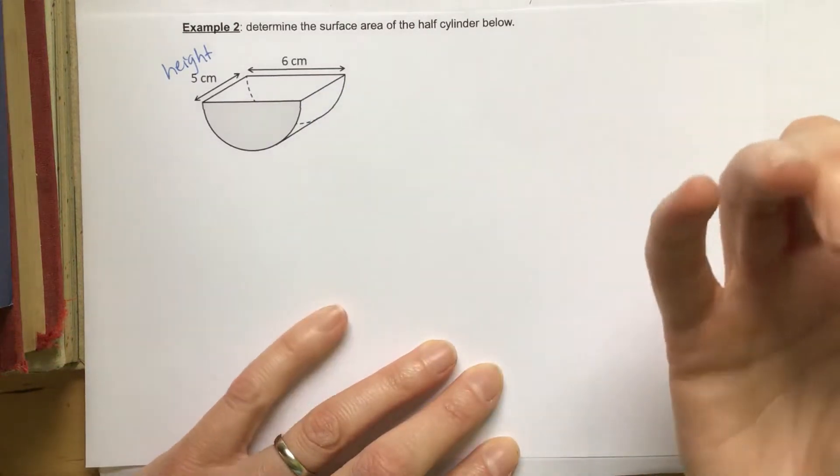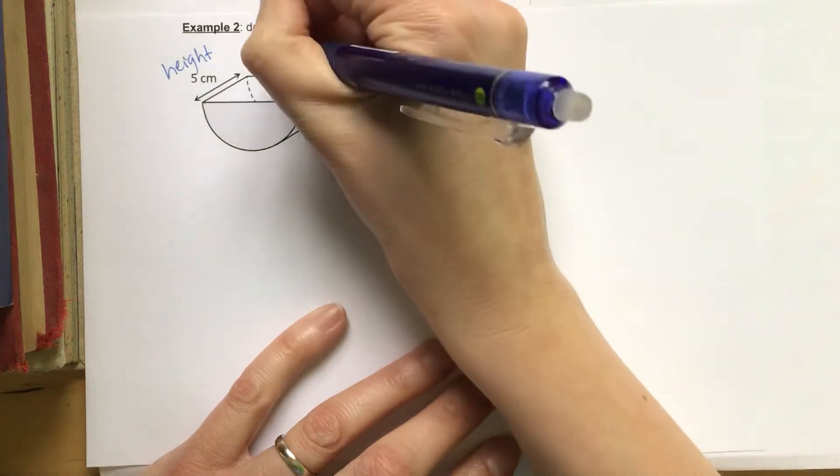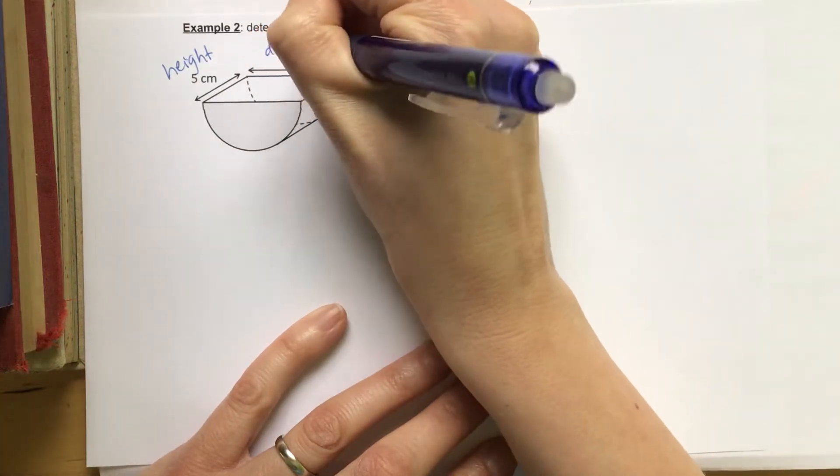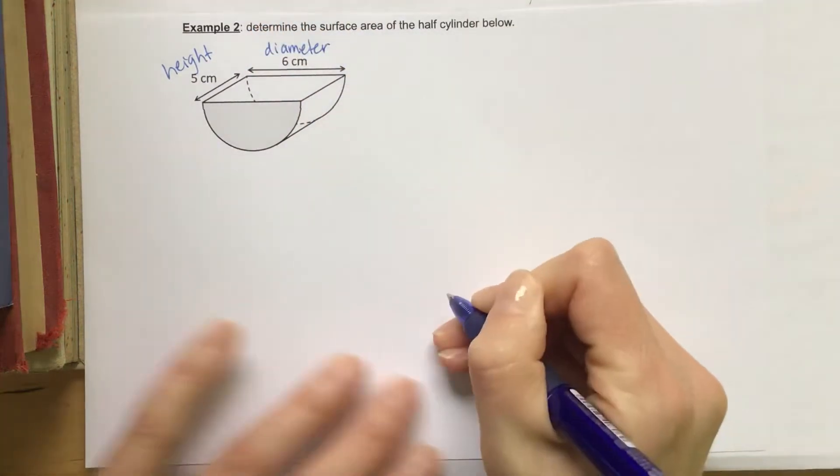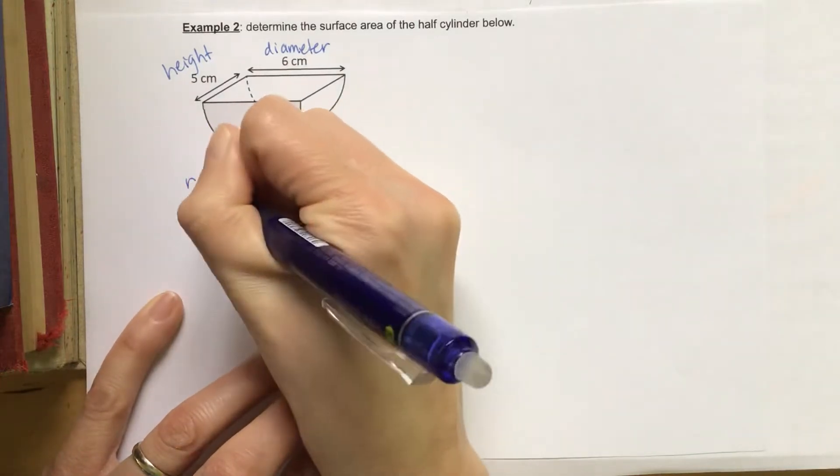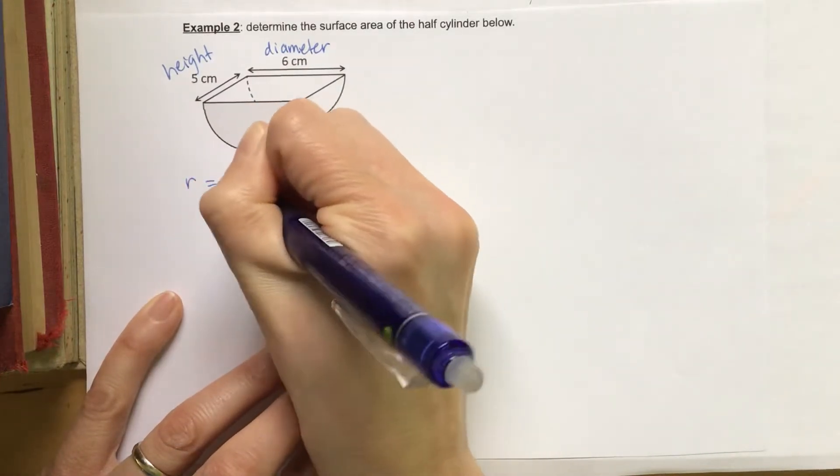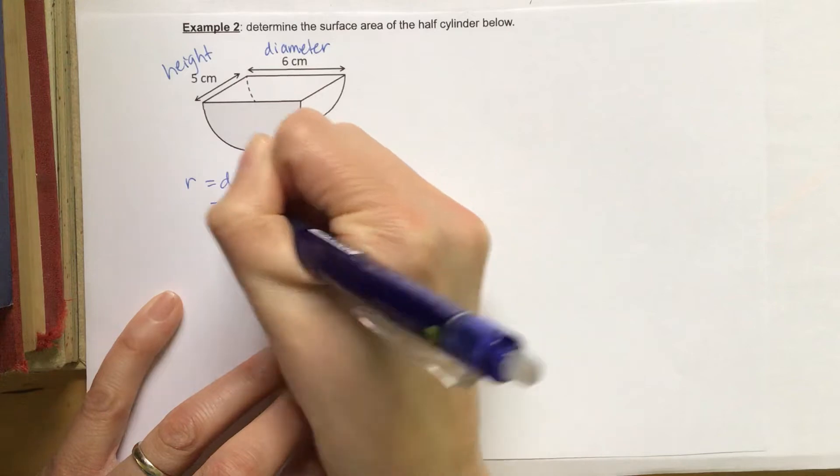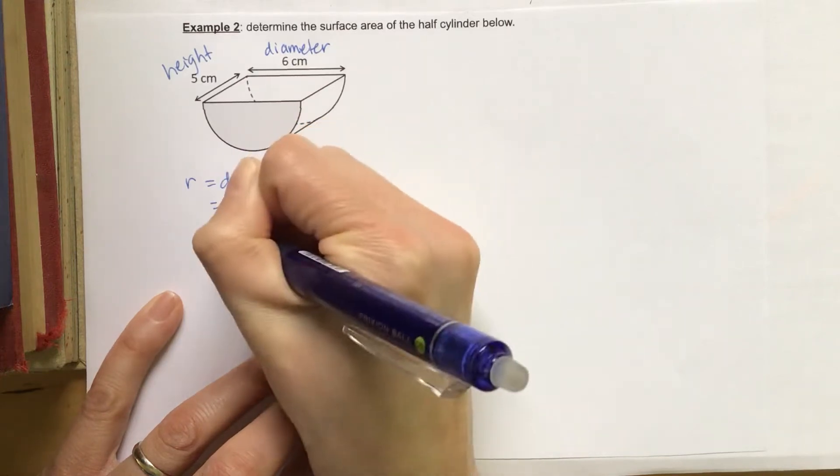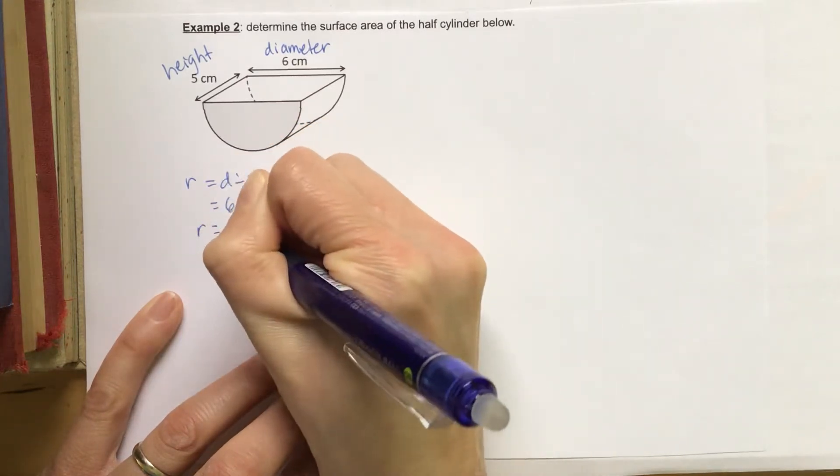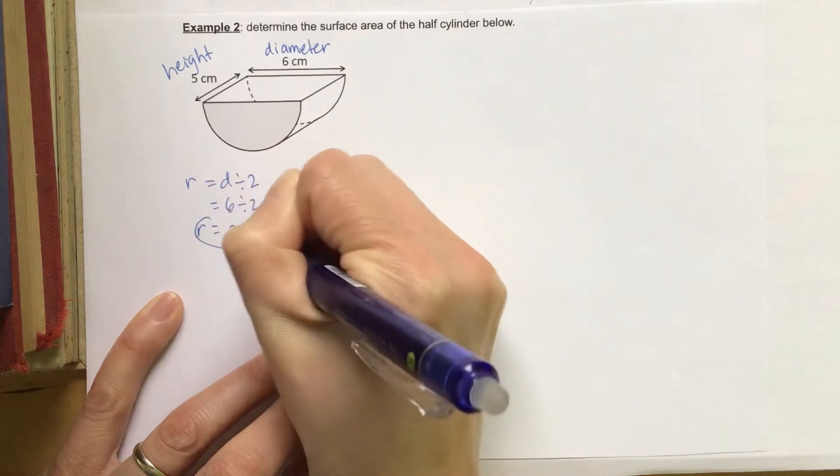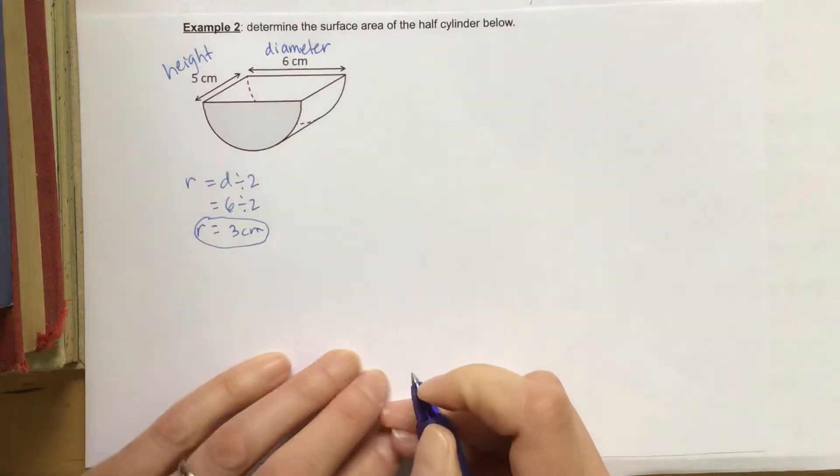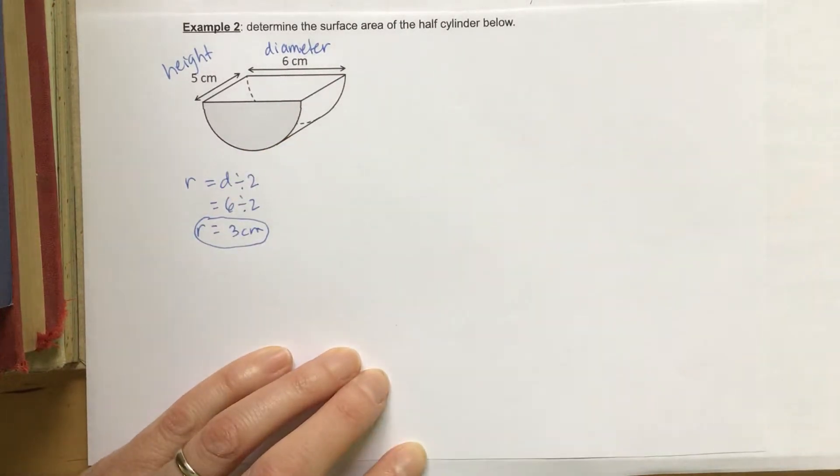Now, when we're doing calculations with the cylinder, though, we usually need the radius. So I'm going to label this as the diameter, but now we're going to determine the radius. So remember, radius is equal to diameter divided by 2. So that's 6 divided by 2, and that gives us a radius of 3 centimeters.